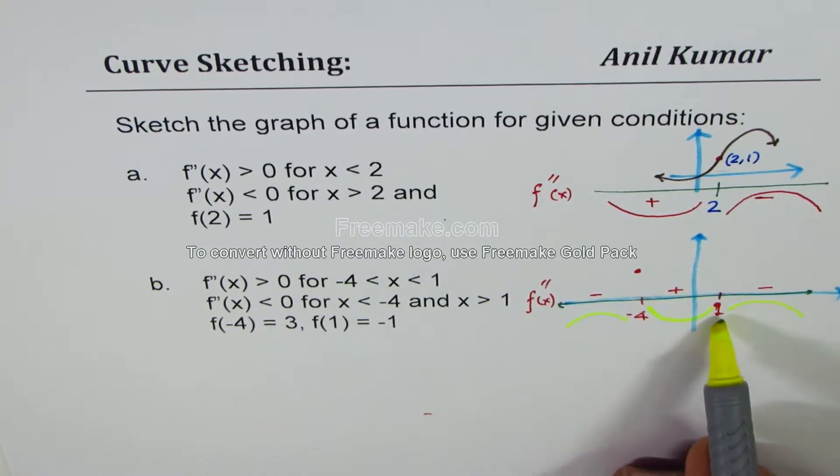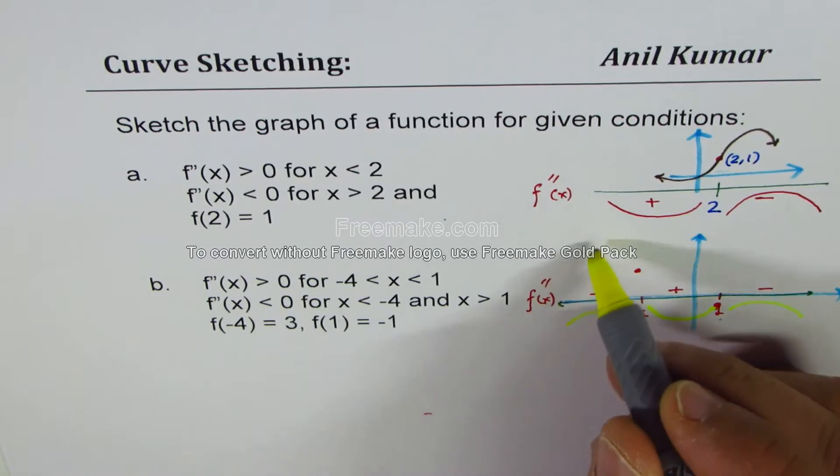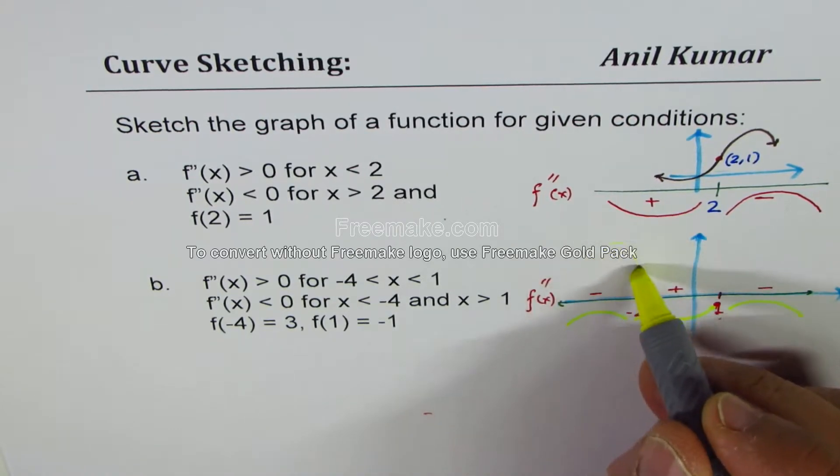So that means we have two points of inflection. Those two points of inflection could be at these points. So the graph comes kind of like this. And this happens to be a point of inflection. So here the concavity changes.